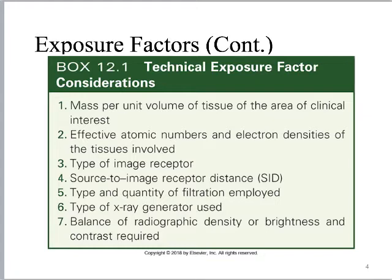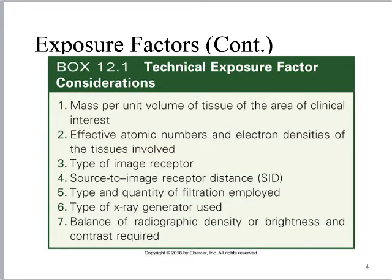Here's a box from one of the textbooks looking at exposure factor considerations that influence patient dose. The mass per unit volume of tissue matters — a hand x-ray has less dose than an abdomen x-ray because a hand has less volume of tissue. Effective atomic numbers and electron densities also influence patient dose. Any time we inject a patient with IV contrast or use barium contrast, we are increasing patient dose because we're increasing the amount of photoelectric interactions occurring due to the presence of this high atomic number material.